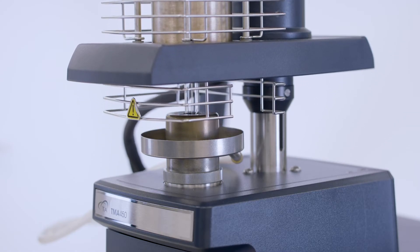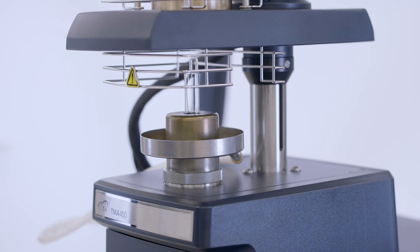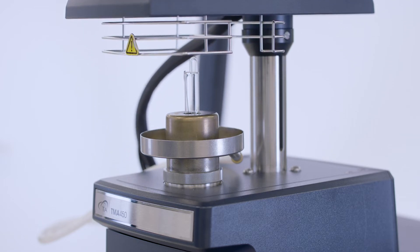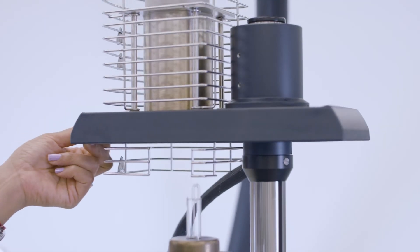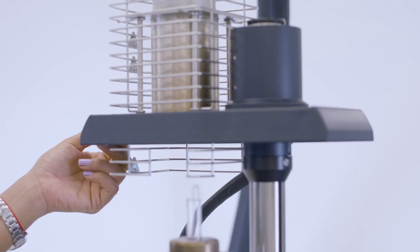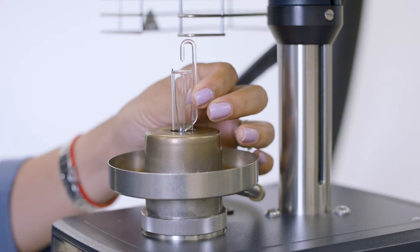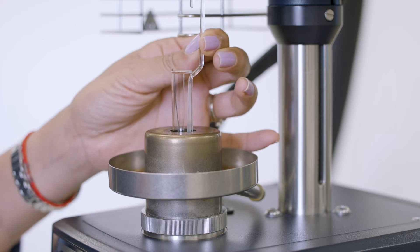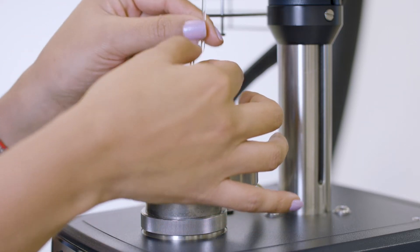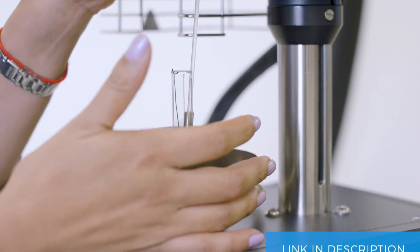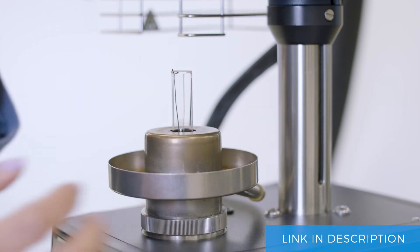Since the configuration of the film fiber accessory is different from that of the other types of probes, you need to follow these steps to install the film fiber probe and stage. First, remove the installed probe. For a detailed explanation on how to remove the probe, please click on the link in the description below.